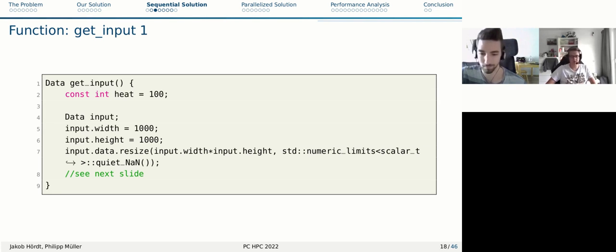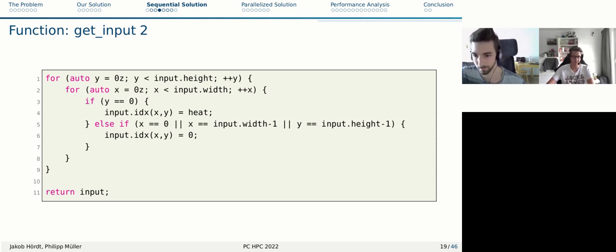The second part of the get input function has two for loops iterating through the field. What this does is it sets our boundary condition. When we would like to calculate a certain scenario, we need to tell the program, in this example, if Y equals zero, the upper border is hot, and every other border is zero. Why are we initializing the borders? I'm going to explain that later. For this scenario, the upper border is heat 100, and the other ones are zero.